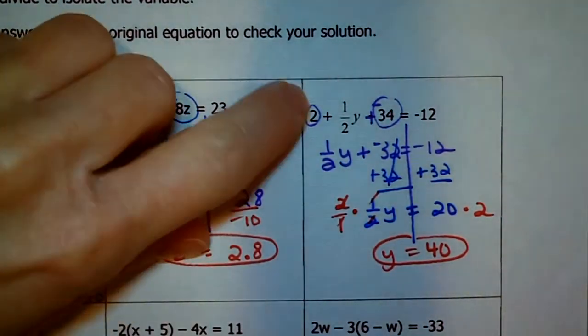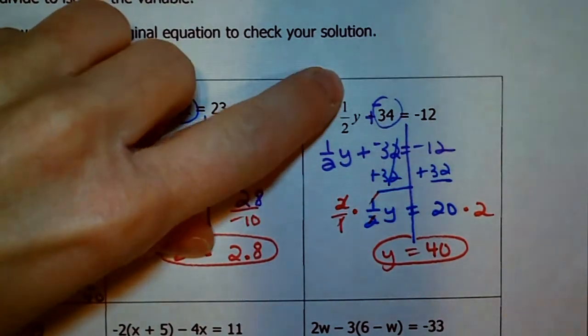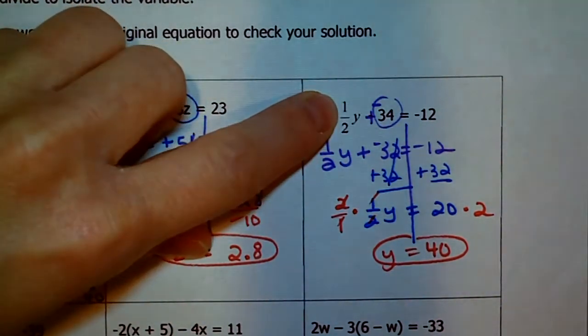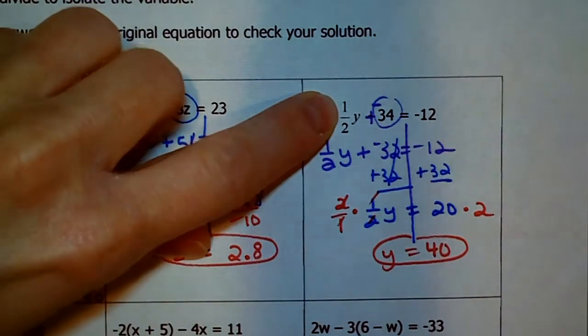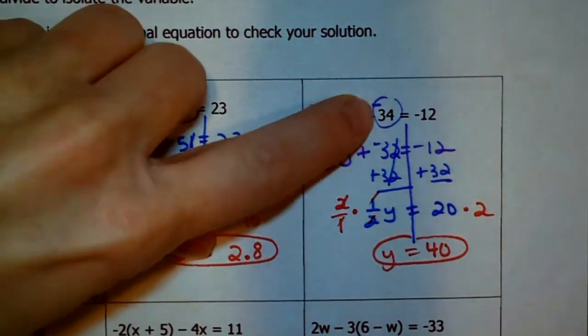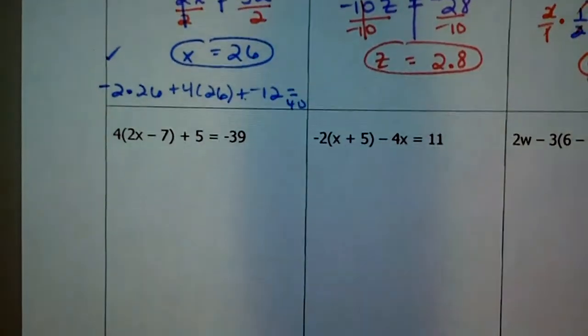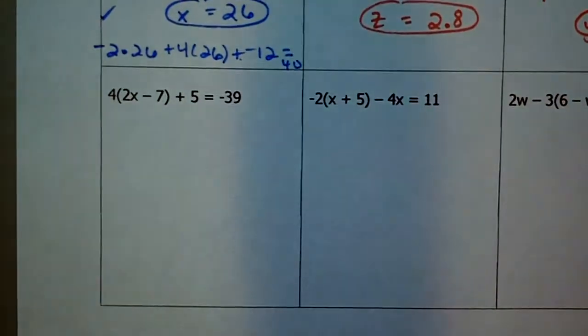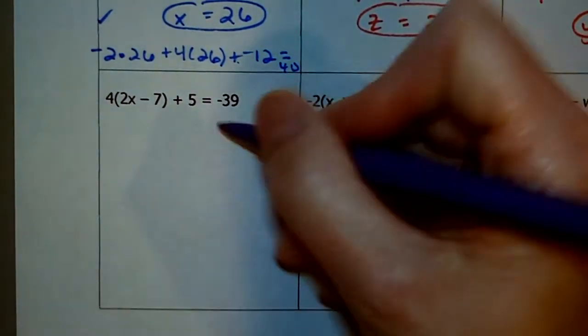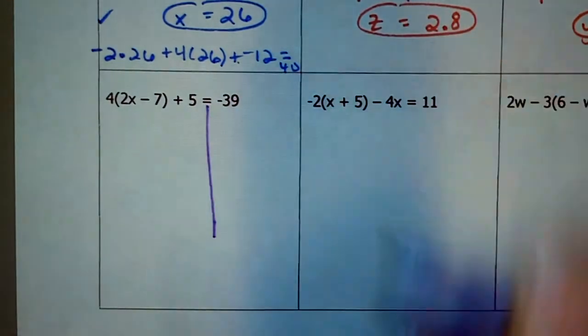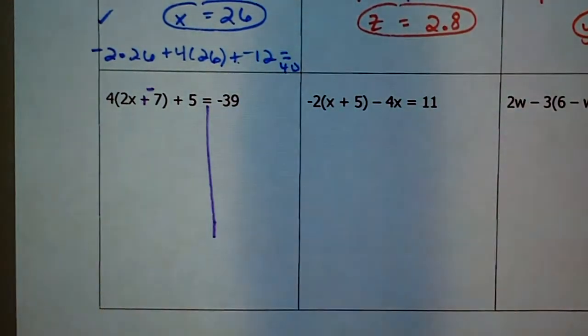To type this into the calculator, I would type in 2 plus, I could either, I would probably type in .5 for 1/2, but you could type in 1 times 2 times 40, plus -34, enter, and yes, you'll get -12 when it happens. Okay. Next one, okay, these are a little different, because there are parentheses, but remember, we know how to get rid of them. So, I'm going to draw the line. I see some subtraction to get rid of, and now, before you combine any like terms, you need to get rid of these parentheses.